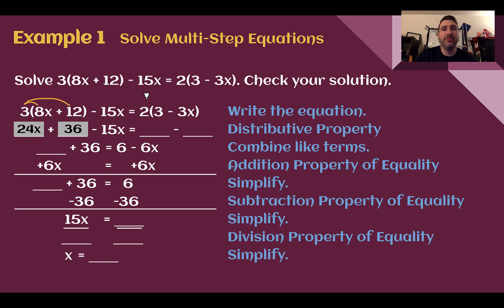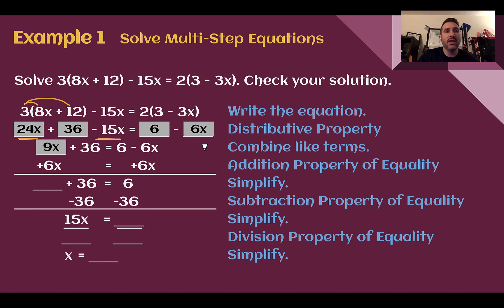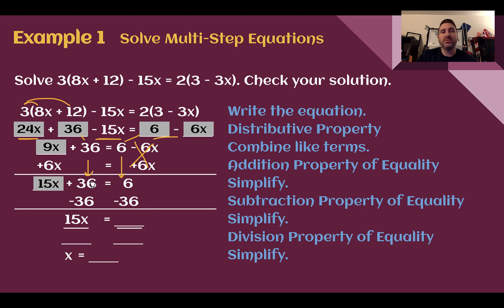Doing the same on the other side to get rid of the other set of parentheses — I have two groups of this. So if I had two 3s, that would be 6. If I had two of the minus 3x's, that would be minus 6x. On the left side, I can see I have two places where there's an x. So 24x minus 15x gives me 9x. I still have that 36, and the right side has not changed yet. Next, I have a variable on both sides, so I'll add 6x to both sides using the addition property. 9x plus 6x is 15x.